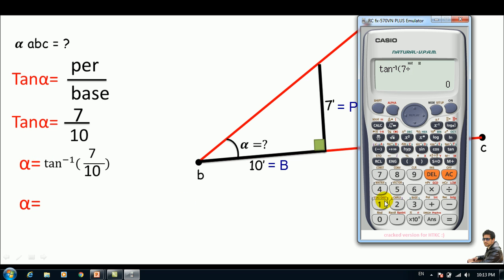So, 7 divided by 10. And I'll close this. And click equal sign. And this is 34.99 and so on. And this is in degrees, okay?